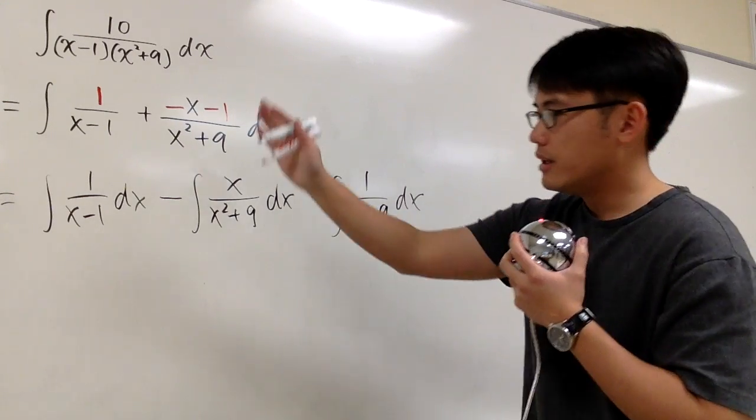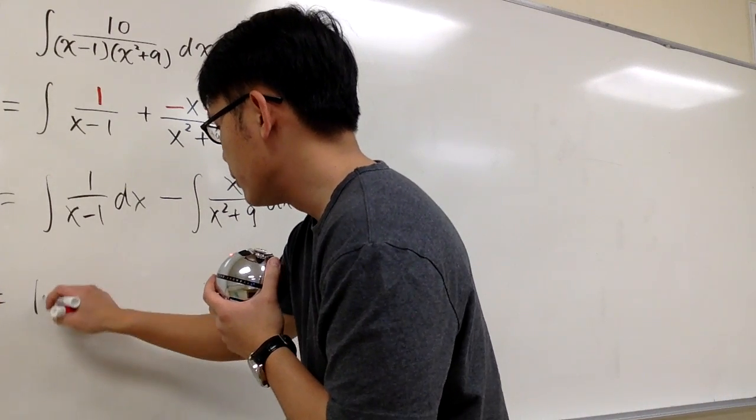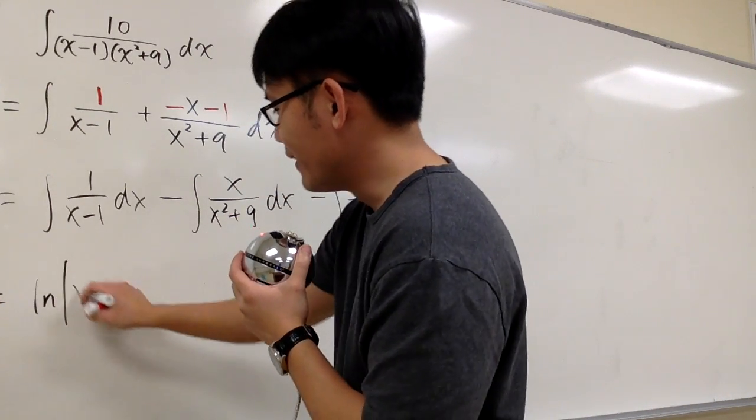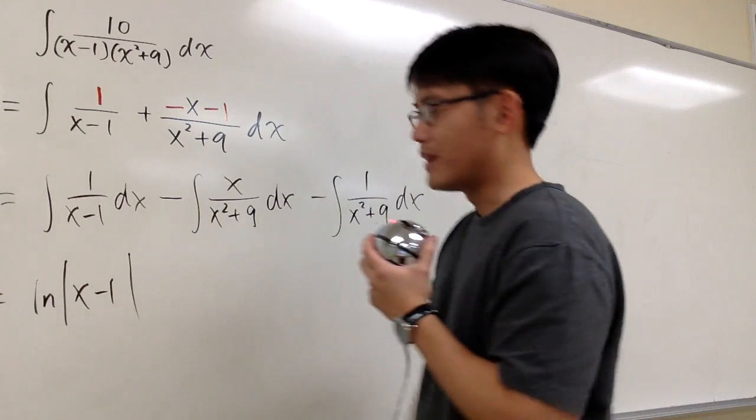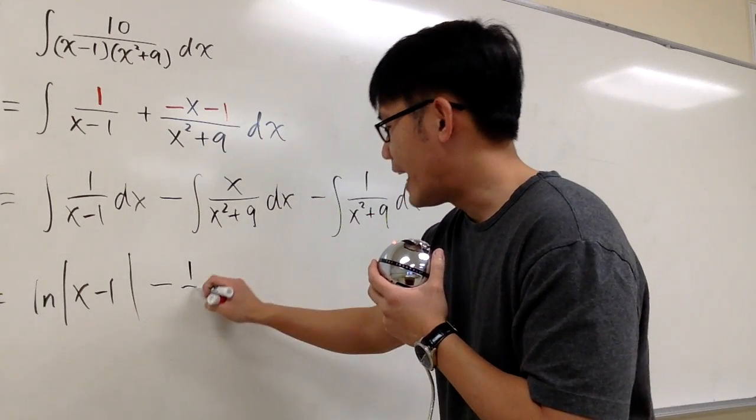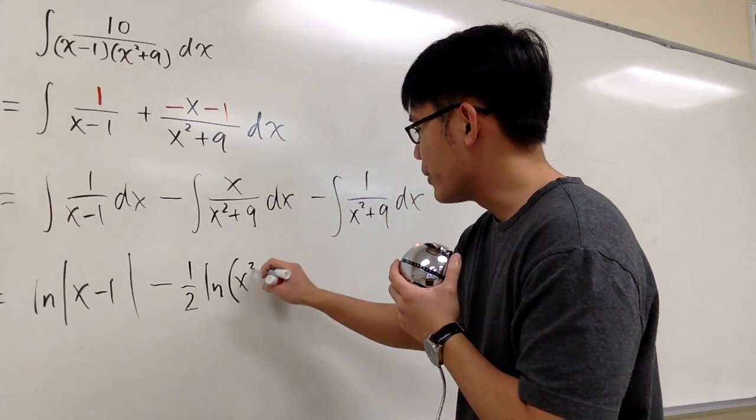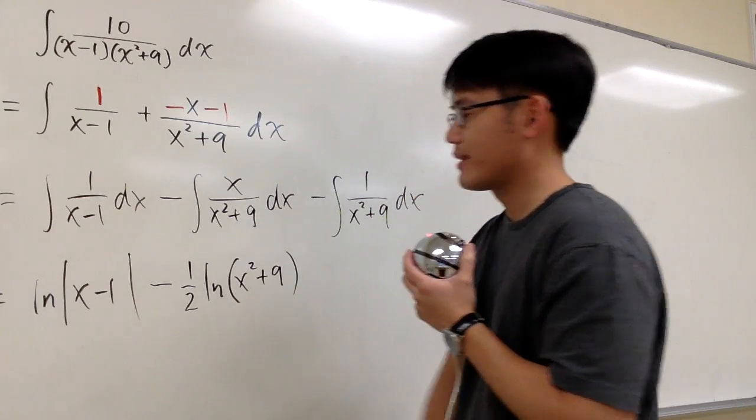And then this right here will be pretty easy to integrate. The first one will give you ln of x minus 1, absolute value. The second one is going to be minus 1 half ln parentheses x squared plus 9.